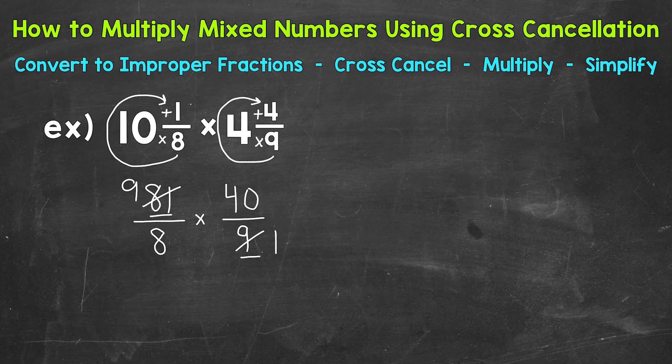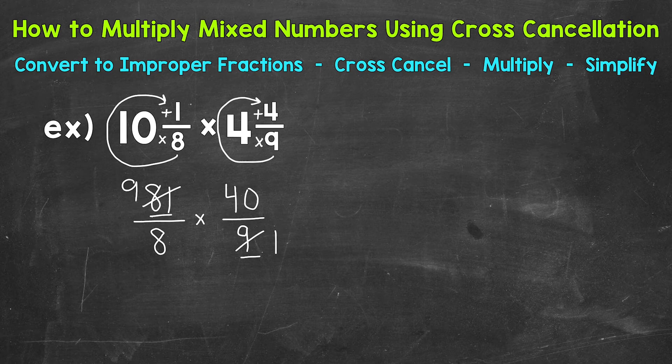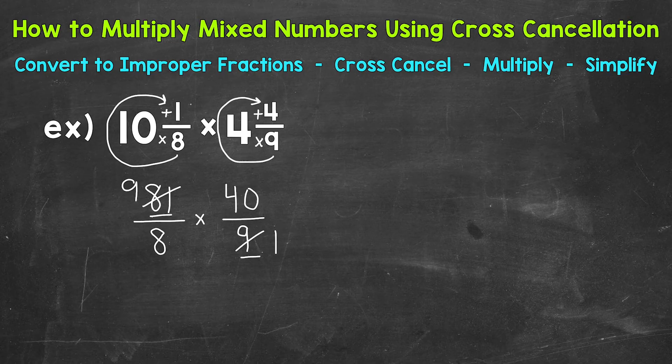We can also look the other way diagonally. So between 8 and 40, do we have any common factors? Yes. The greatest common factor between 8 and 40 is 8. So let's divide them both by 8. So 8 divided by 8. Let's cross it out. That's going to give us 1. And then 40 divided by 8 is 5.